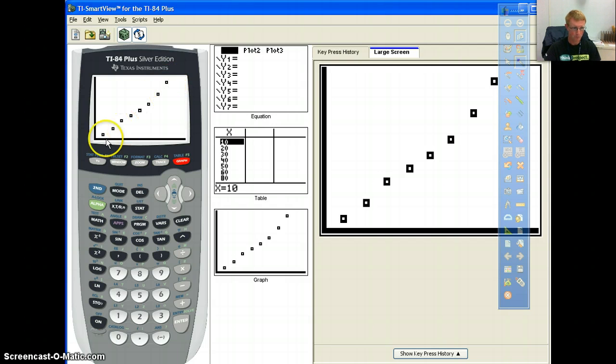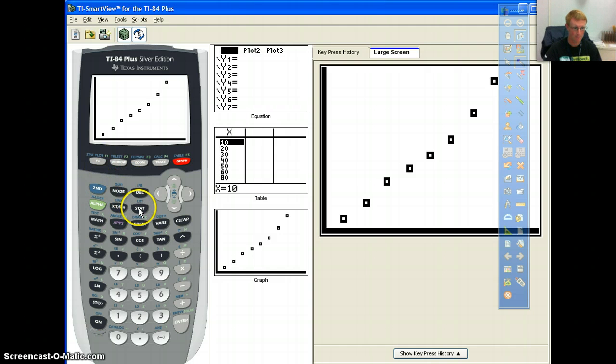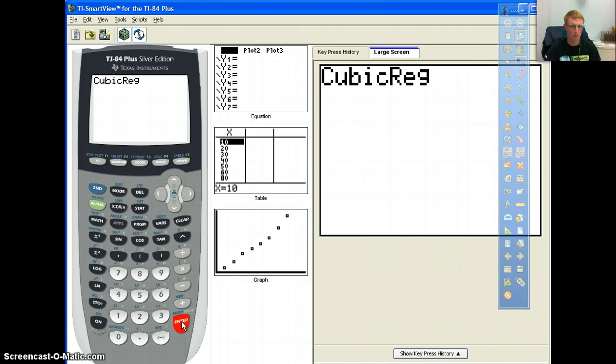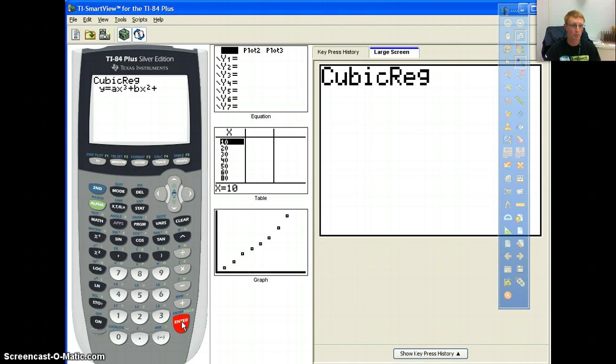Then our next step is we're going to go to our stat again. And we're going to go to calculate. And we're going to go down to cubic regression. Because we know we're doing a cubic regression, we're going to go to cubic regression. We're going to hit enter. And then we're going to hit enter again. And what's going to happen is it's going to give us all of the approximate values of what we put in front of our equation. So you can see on your notes, it already says under step 2 what your equation is.